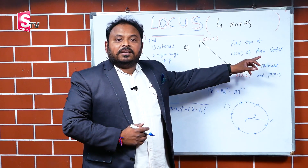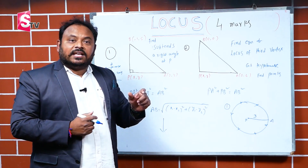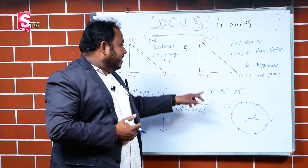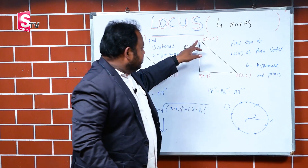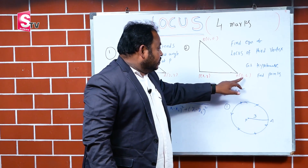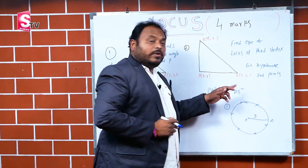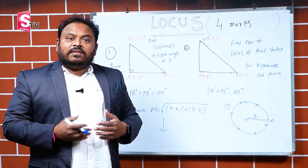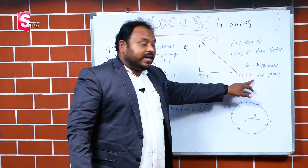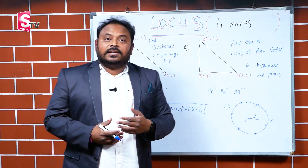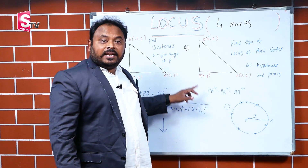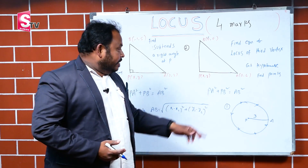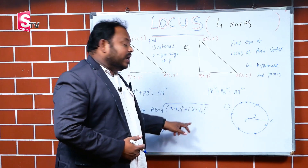Second problem: find the equation of locus of the third vertex. They are saying about the angles — the third vertex of a right angle triangle. The hypotenuse endpoints are given as (0, 6) and (6, 0). A point on the Y-axis has X-coordinate 0, so we write (0, 6), and point B is (6, 0). We are finding the third vertex P. The condition is the same: PA² + PB² = AB². Applying this formula, you can get the answer.